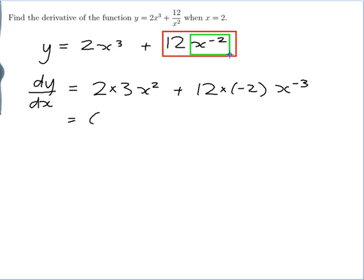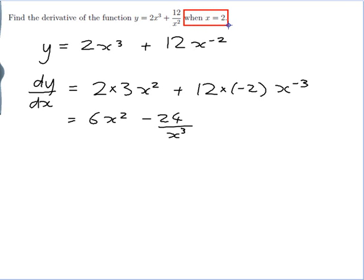And so this comes out to 6x squared minus 24x to the minus 3 would be on x cubed. And that's my answer for dy on dx. But my question doesn't ask for dy on dx. It asks for dy on dx when x is equal to 2.